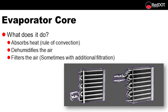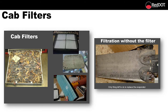The evaporator core absorbs heat via the rule of convection. It dehumidifies the air and filters the air, sometimes with additional filtration. The evaporator core is out of sight as it's mounted within the dash of most vehicles. Cab filters come in many shapes and sizes but all perform one basic but very important function: they filter the air. In severe cases it is possible to plug the fins of the evaporator if debris builds up. If airflow between the fins is restricted the HVAC system cannot function properly, and the obvious effects will be lack of heat or cooling.